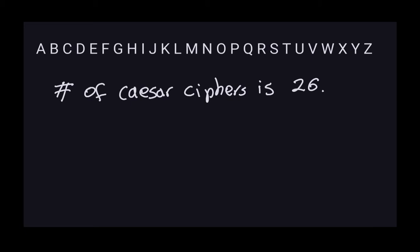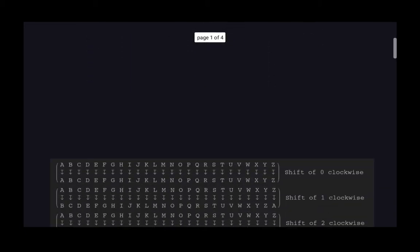I'm going to show you another representation — how you can think about the Caesar cipher — and it's kind of like a matrix notation. If you don't know what a matrix is, that's fine, just think about it as an arrangement in rows and columns. Let me show you what I mean by that.